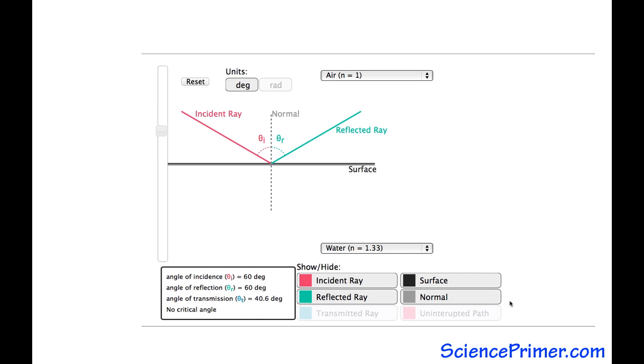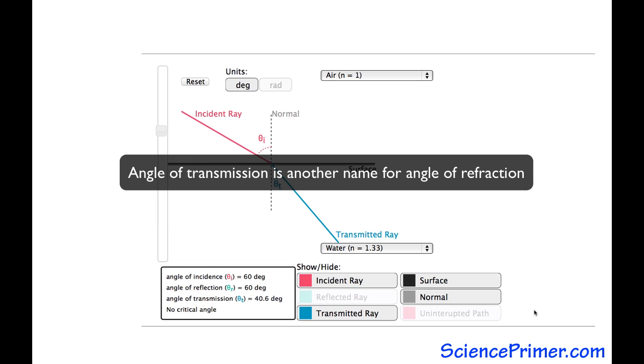Light-rays that pass through the interface are transmitted rays. These rays bend. This bending is called refraction. The amount a light-ray refracts is described as the angle of refraction. This is the angle between the transmitted ray and the normal. The angle of refraction is also called the angle of transmission.